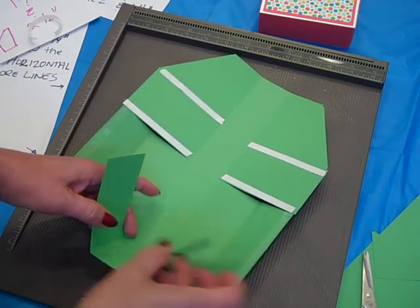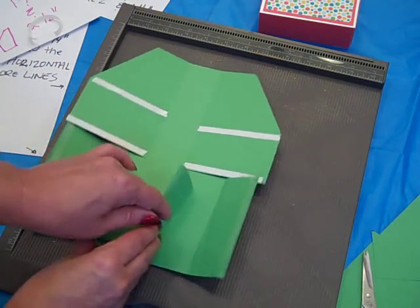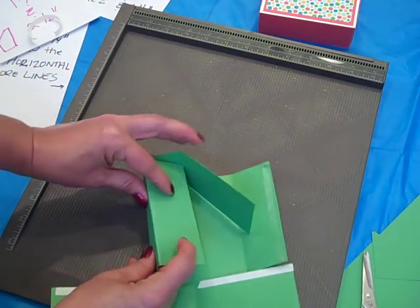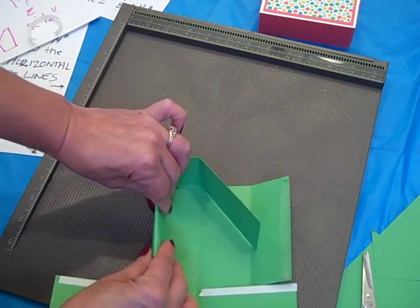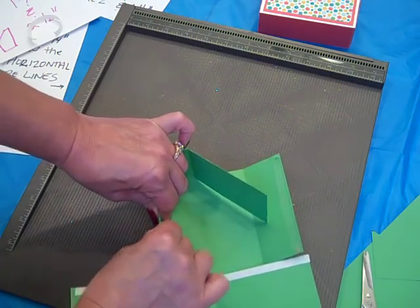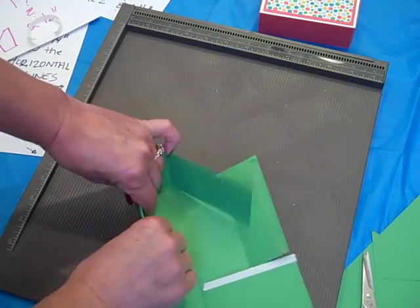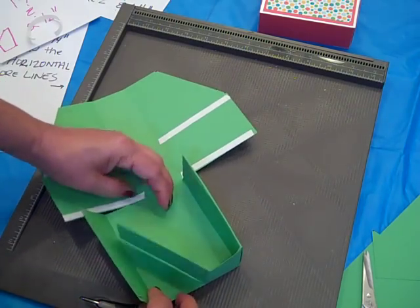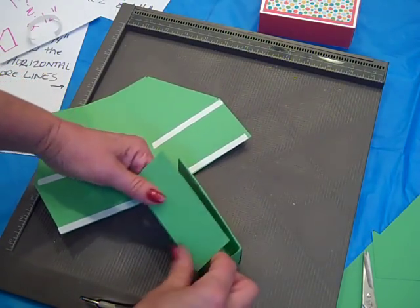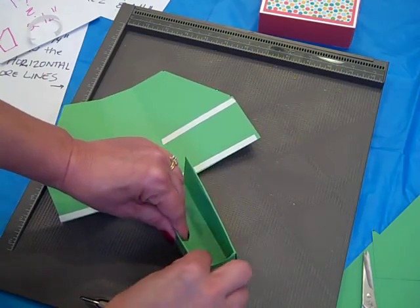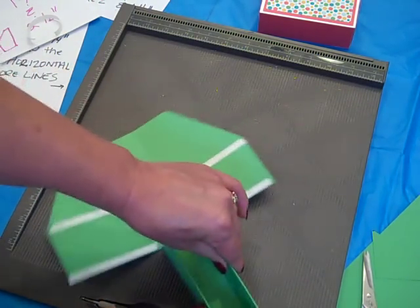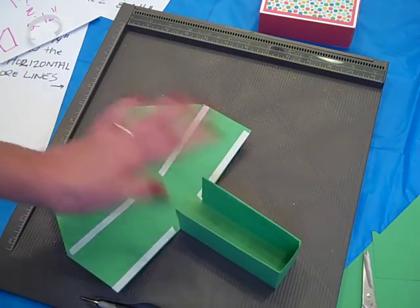And then again we're going to bring this inward and wrap this around. And again what that does is it's going to reinforce that side, the inside of where our cards are going to go. And the other side too, get that and wrap that around. So now we have a nice sturdy card base that can hold our cards.